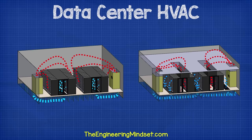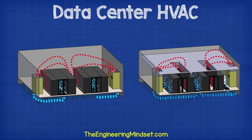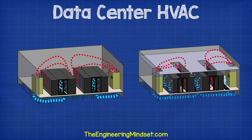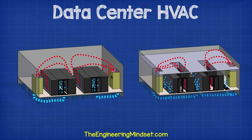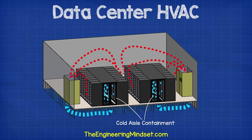A much improved design, and one that is very popular currently for both new and existing data centers, is to use a physical barrier to separate the two air streams. Cold air containment is a very popular choice for existing data centers because it is easy and cheap to implement, which means the payback is quick. The cold air fills a cold aisle and then the hot discharge fills the rest of the room with the CRAC units pulling this in for reconditioning.